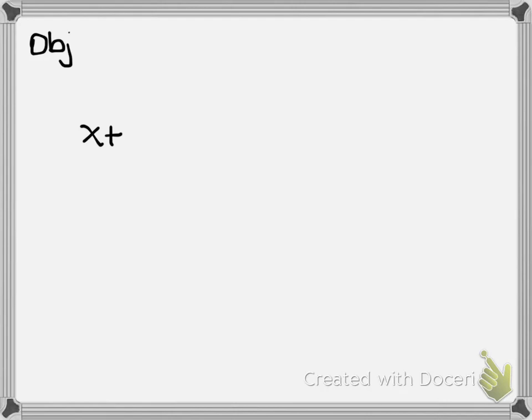You saw some problems like this, and what we told you to do was to get one variable alone and then use substitution. But I want to show you a different strategy. The whole point to solving a system is to eliminate one of the variables.